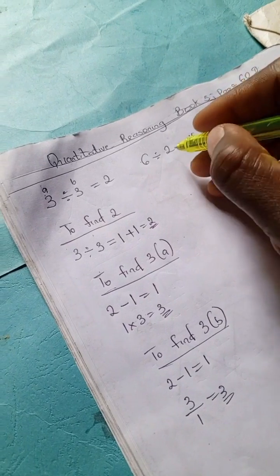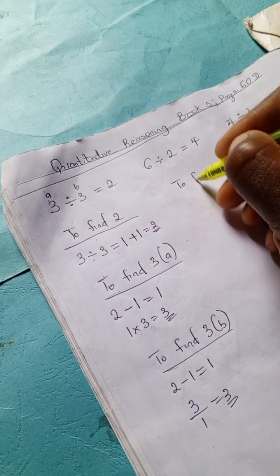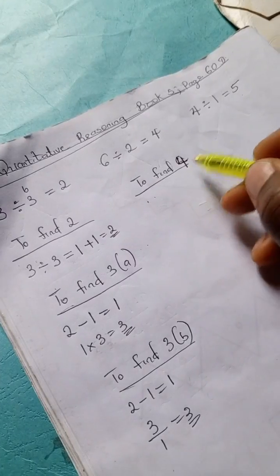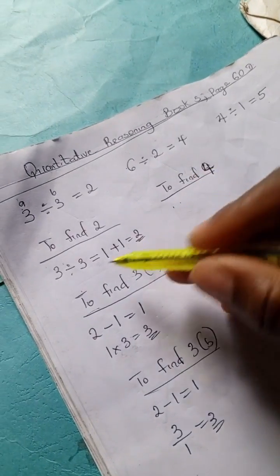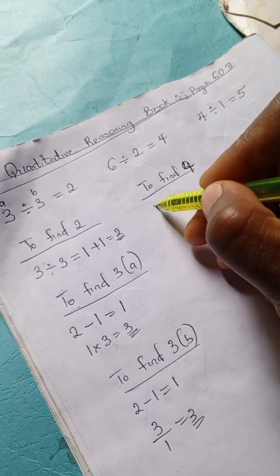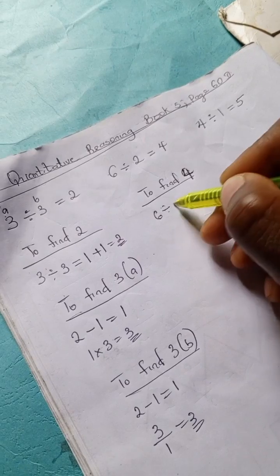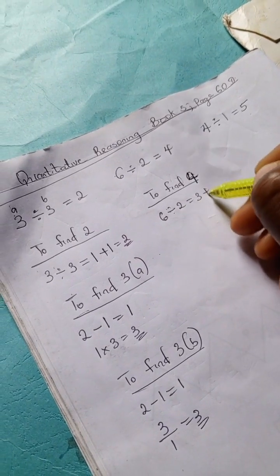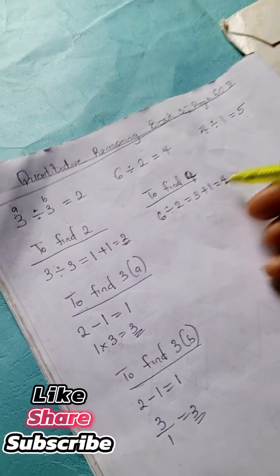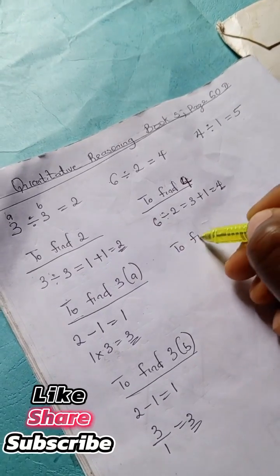Let's do the same for this example and see if we're going to get the same thing. To find 4, we have 6 divided by 2 is 3, 3 plus 1 is 4. So to find 6, we have 4 minus our imaginary 1 which is 3, 3 times 2 is 6.